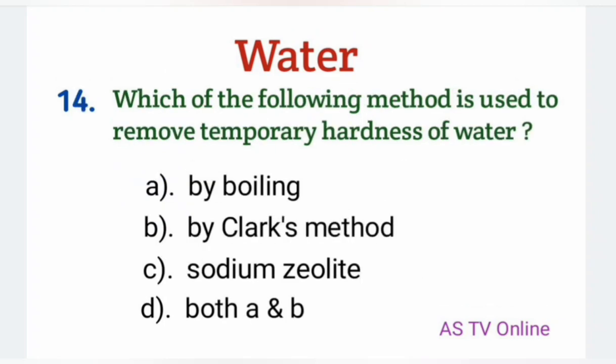No. 14: Which of the following method is used to remove temporary hardness of water? By boiling, by Clark method, sodium zeolite, both A and B — Boiling اور Clark method یہ دونوں temporary hardness کو remove کرنے کے لئے use ہوتے ہیں اور sodium zeolite جو ہے یہ permanent hardness کو remove کرنے کے لئے use ہوتا ہے.